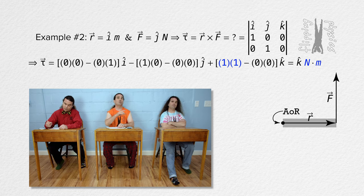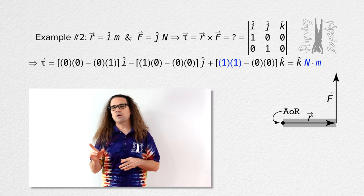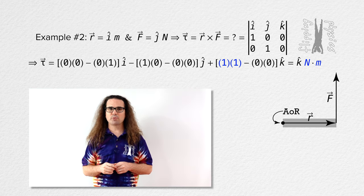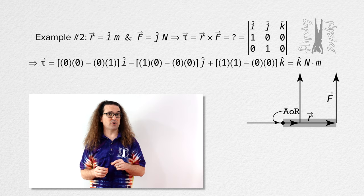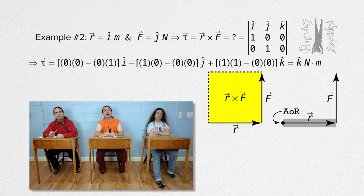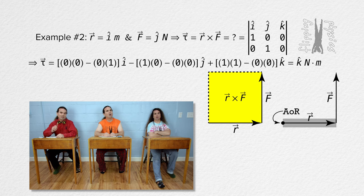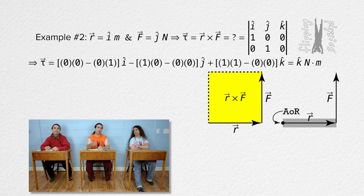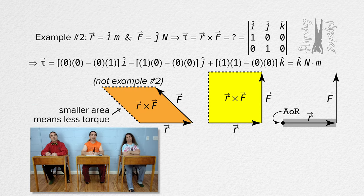I forgot units. Yep. The units for the 1 times 1 in front of the k unit vector are meters and newtons, so newton meters. Now, remember that the cross product represents the area of the parallelogram created by the position and force vectors. But that is a square, not a parallelogram. A square is a special case of a parallelogram where all four sides have equal length and all four corners are 90 degrees, so every square is a parallelogram. And if the force were at an angle that was not 90 degrees, the area would be a parallelogram but not a square.